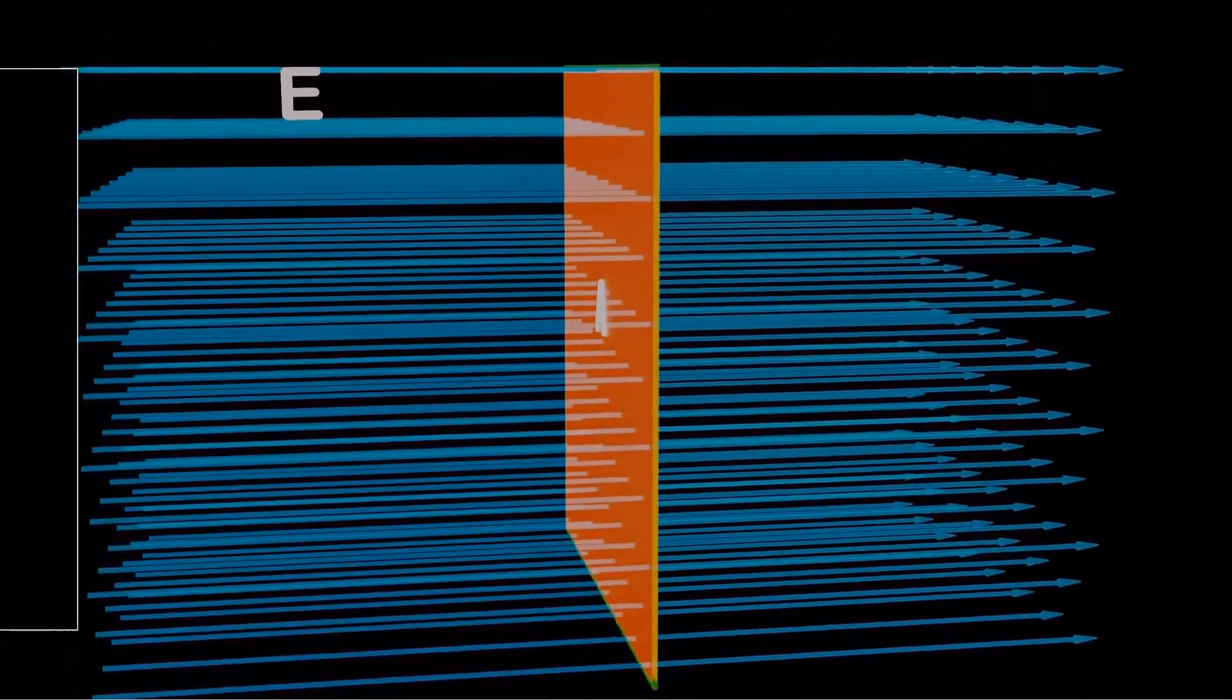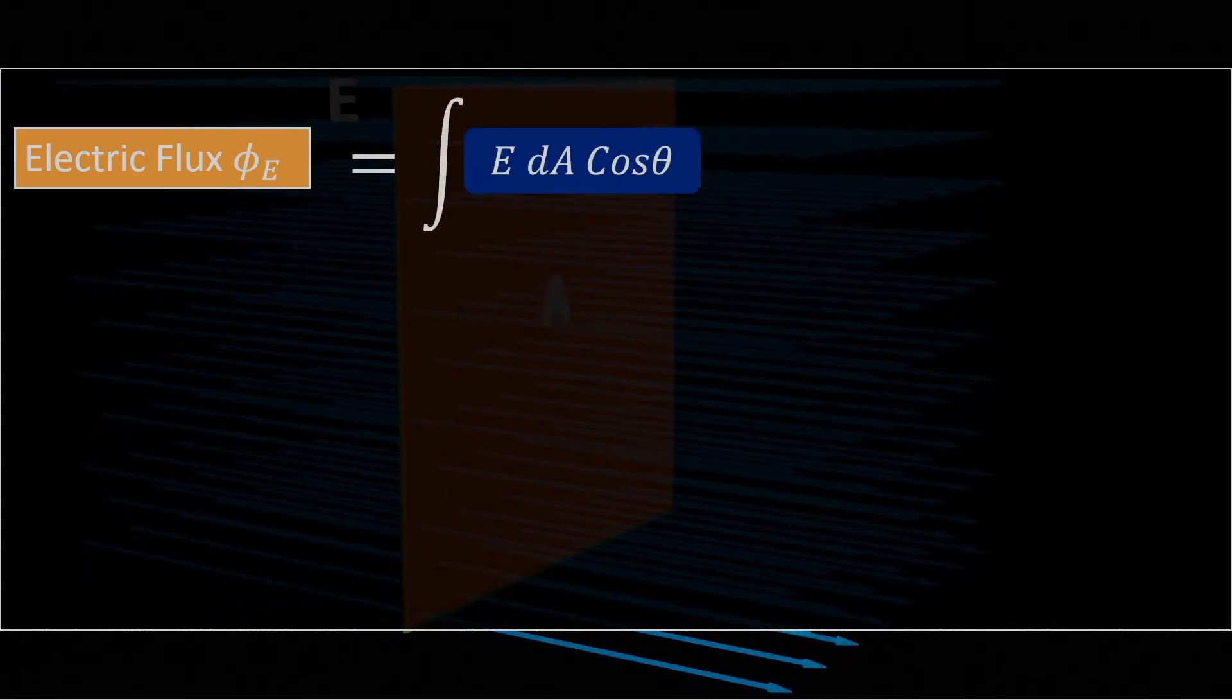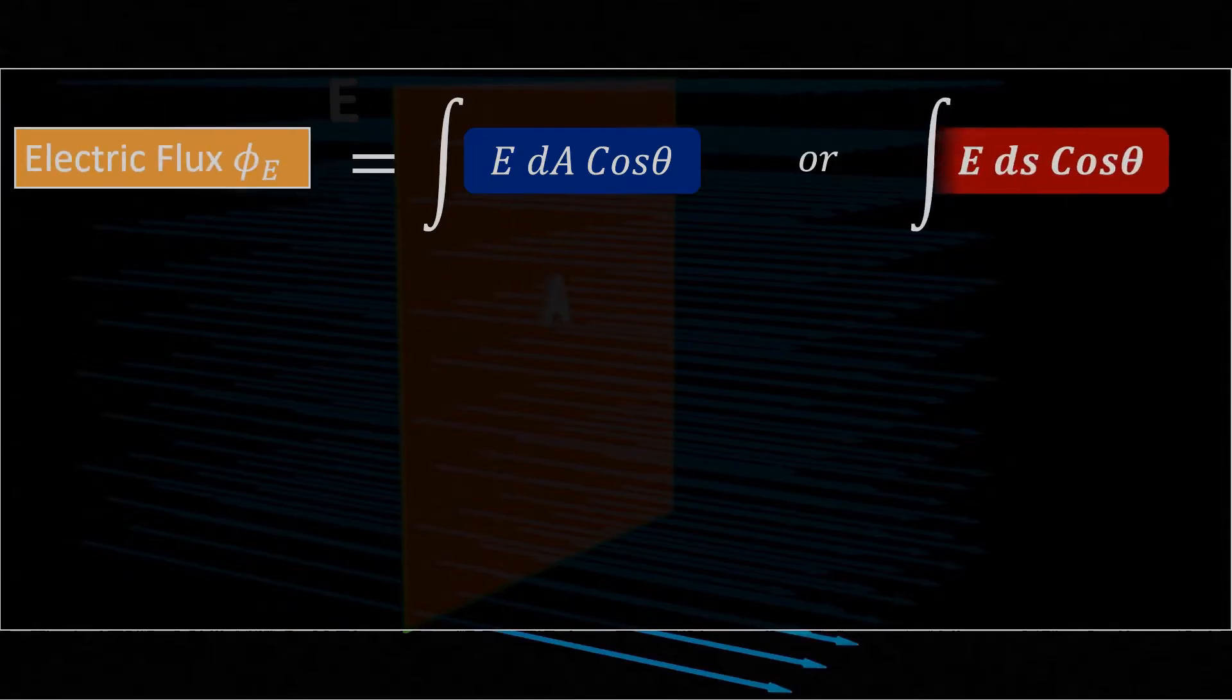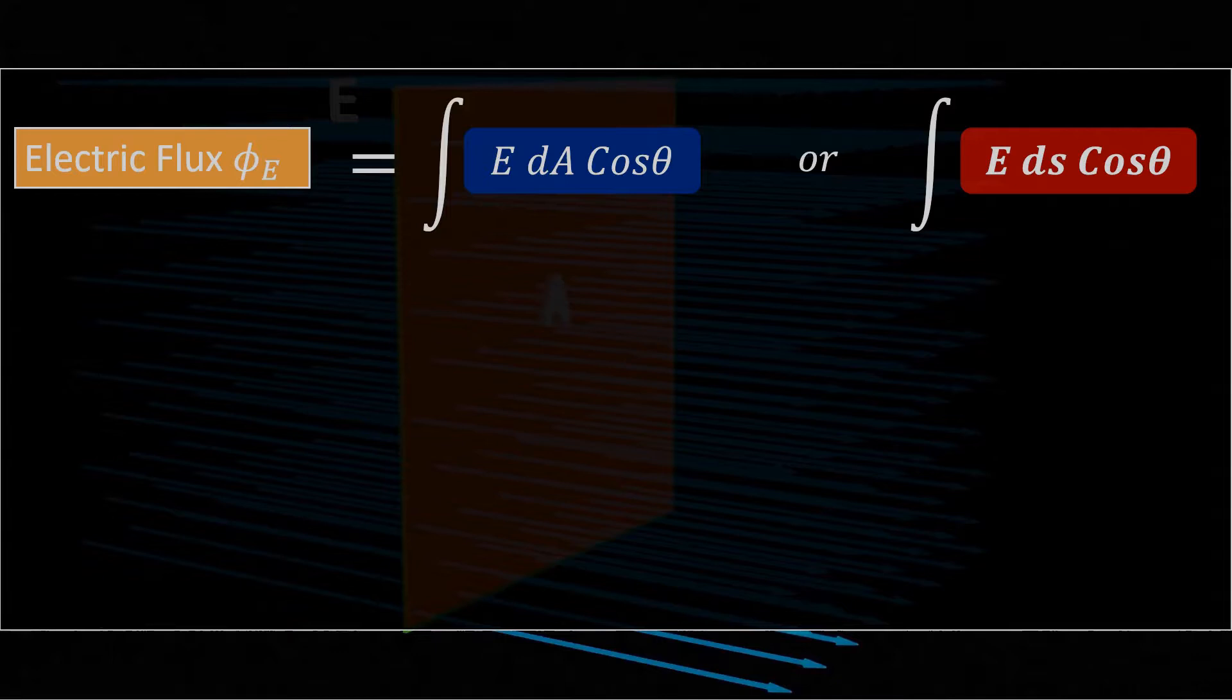Mathematically, Electric flux is equal to the integral of E dA cos theta. In the case of 3 dimensional surface, we generally use the term surface area, so we can also express electric flux as the integral of E dS cos theta, where dS represents a very small surface element.